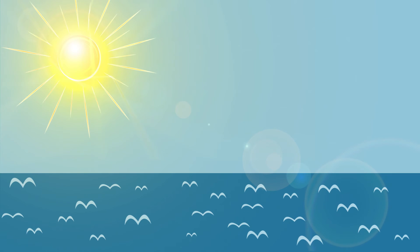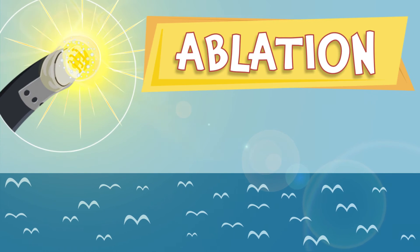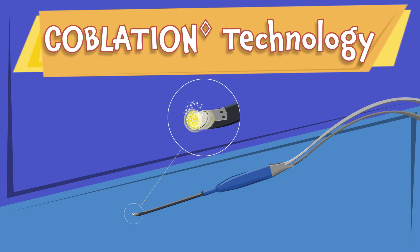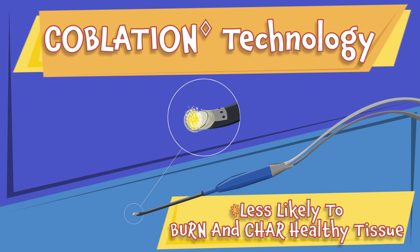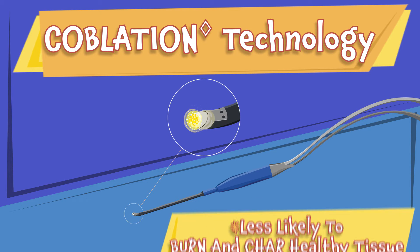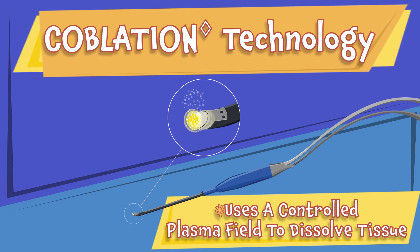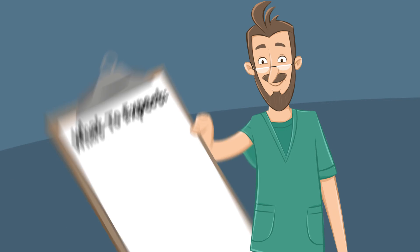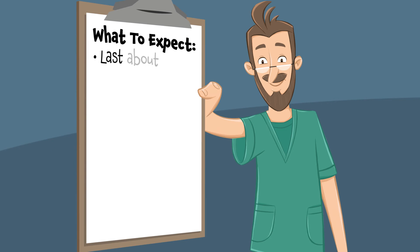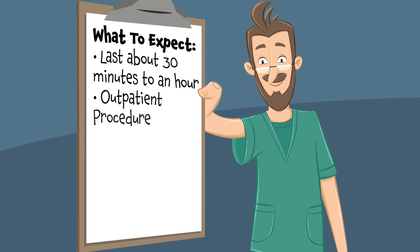Because coblation technology doesn't rely on heat to dissolve tissue, it's less likely to burn and char healthy tissue like traditional electrocautery. Coblation technology uses a controlled plasma field to precisely dissolve and remove tonsil tissue. Tonsillectomies usually last about 30 minutes to an hour and are an outpatient procedure, which usually means the patient can go home after the surgery.